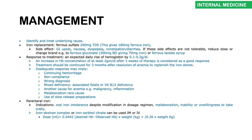Continue treatment for three months after anemia resolves to replenish iron stores. Inadequate response may be due to continued bleeding, non-compliance, wrong diagnosis, mixed deficiency (concomitant folic acid or vitamin B12 deficiency), another underlying cause like malignancy or inflammation, or malabsorption. For those who cannot tolerate oral iron or have malabsorption, parenteral iron is an option — iron sucrose, iron sorbitol, or iron dextran complex. The dose is calculated using a standard formula.